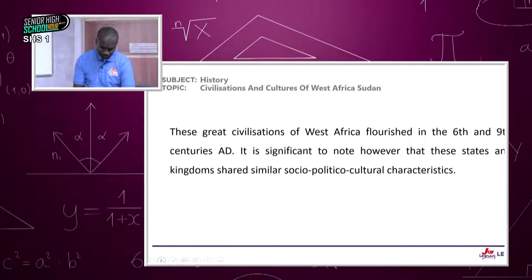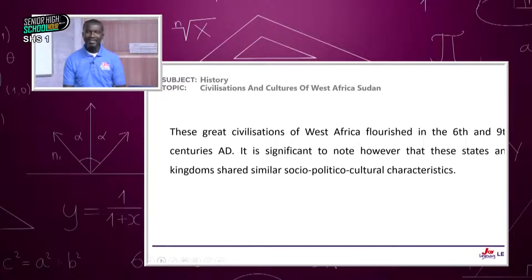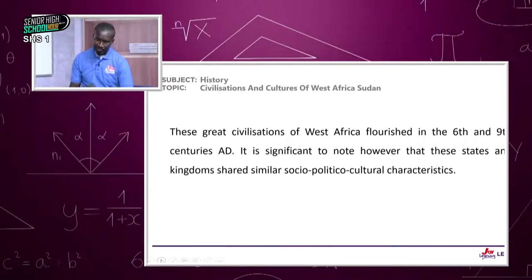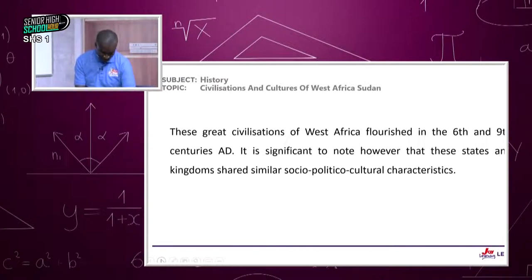This is Form One Senior School History. These great civilizations of West Africa flourished in the 6th and 9th centuries AD. It is significant to note that these states and kingdoms shared similar sociopolitical and cultural characteristics — the civilizations of Ghana, Mali, Songhai, Kanembonu, and Hausa.